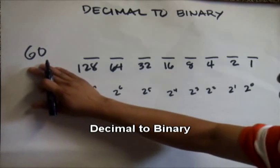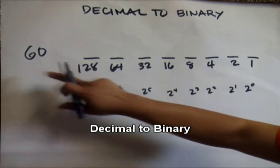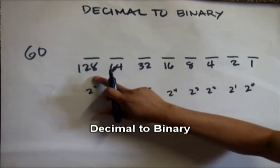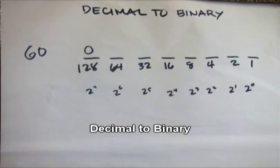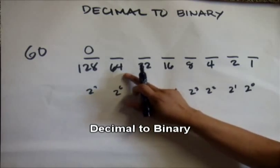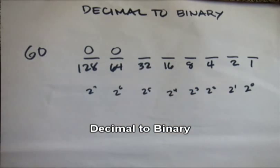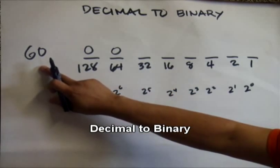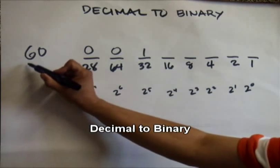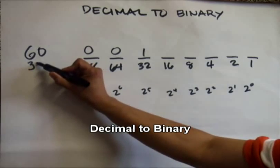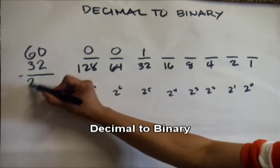Now we have the decimal number 60. 128 cannot fit in 60, so we put zero. 64 cannot fit in 60, so we put zero. 32 can fit in 60, so we put one. 60 minus 32 equals 28.